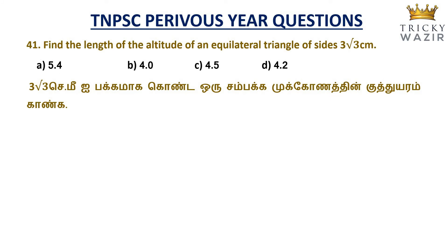Hello guys, welcome to Tricky Vazir. Find the length of the altitude of an equilateral triangle of sides 3 root 3 centimeters.